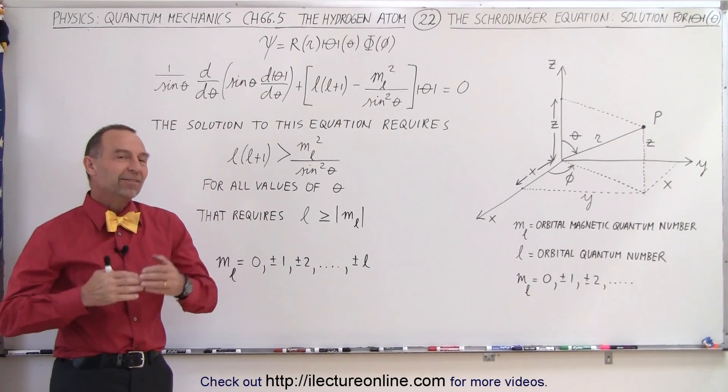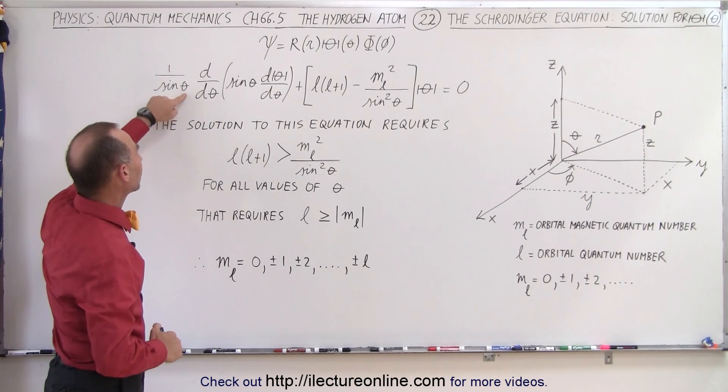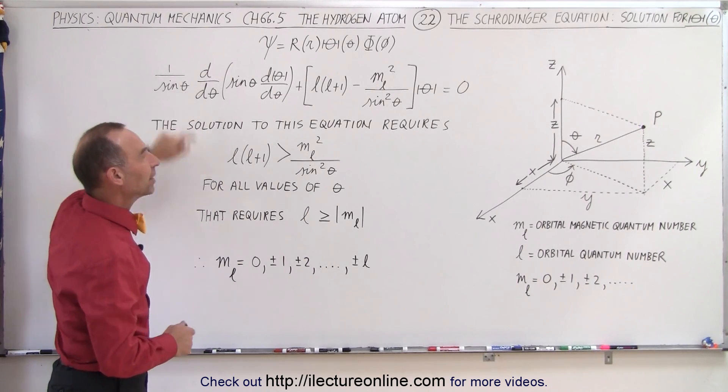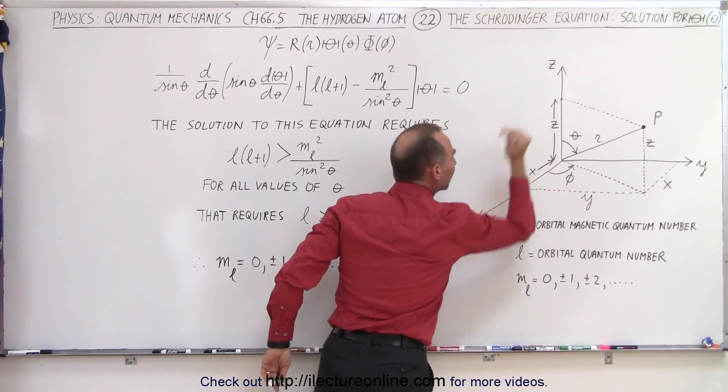Welcome to our lecture online. Now let's take a look at our second differential equation, the one that relates to the variable theta, which is the variable which associates the position of the electron relative to the positive z-axis.